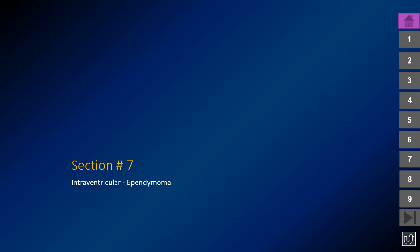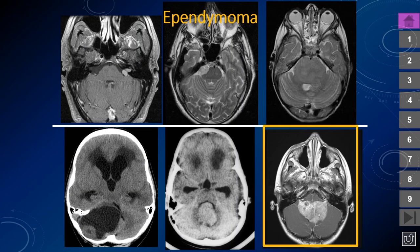The ependymoma's cell of origin is the ependymal lining of the ventricular system, and these lesions typically grow almost exclusively within the ventricular lumen. For that reason, ependymomas are considered circumscribed gliomas rather than diffuse. The classic ependymoma presents in the fourth ventricle in a child, sometimes in the lateral ventricle; ependymomas can also be intraspinal intramedullary tumors. The fourth ventricular ependymoma takes on the shape of an enlarged fourth ventricle and often has extensions into both lateral recesses simultaneously.